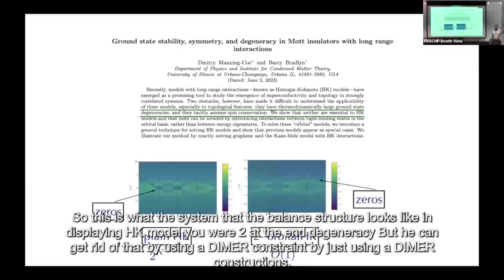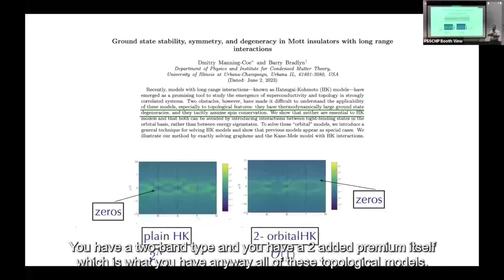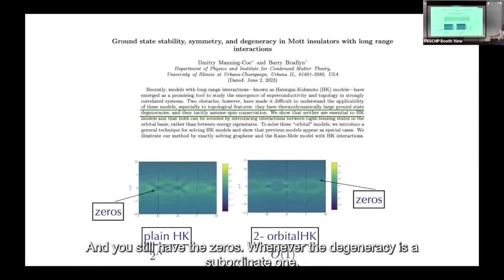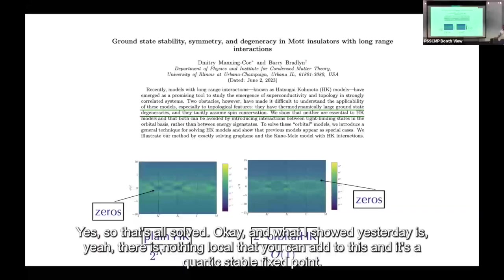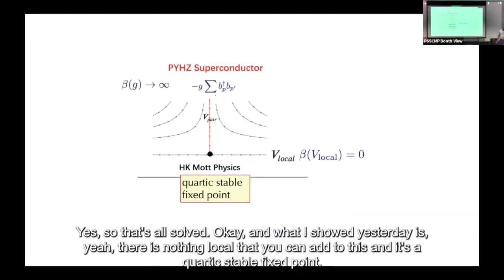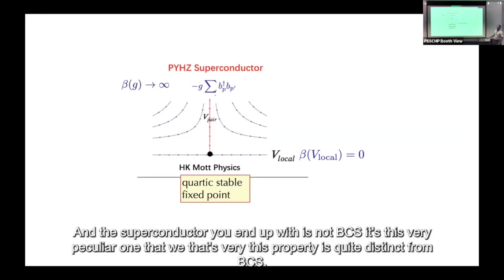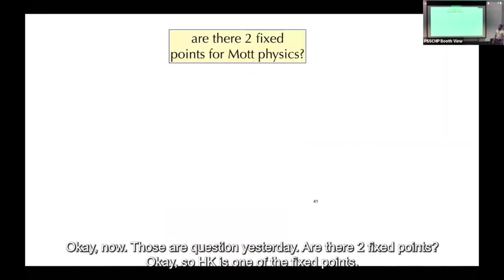The singly occupied sector has degeneracy 2^N, but Barry Bradlyn has shown we don't need to worry about that. Using a dimer constraint with two atoms per unit cell — which is what you have in topological models anyway — you still have zeros but the degeneracy is just of order one, not a thermodynamic quantity. There's nothing local you can add to this; it's a UV-stable fixed point, and the superconductor you end up with is not BCS.